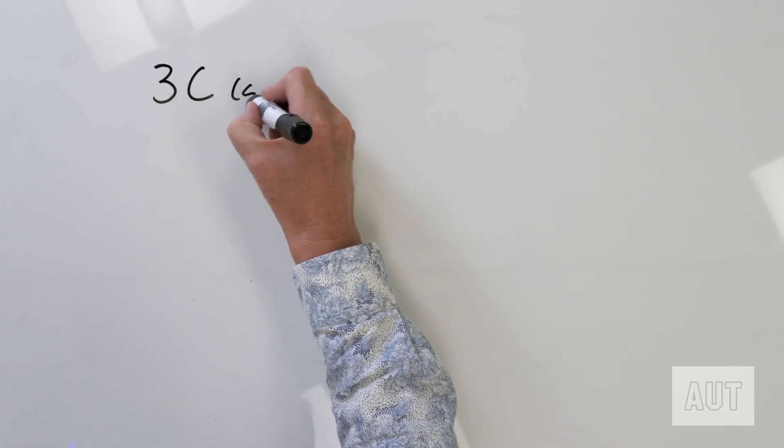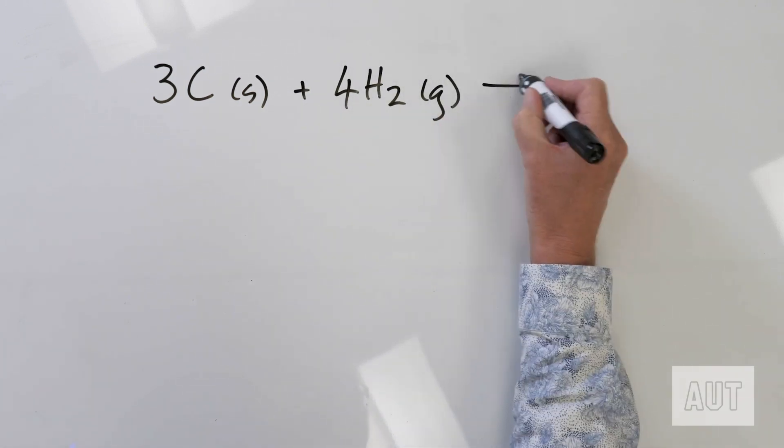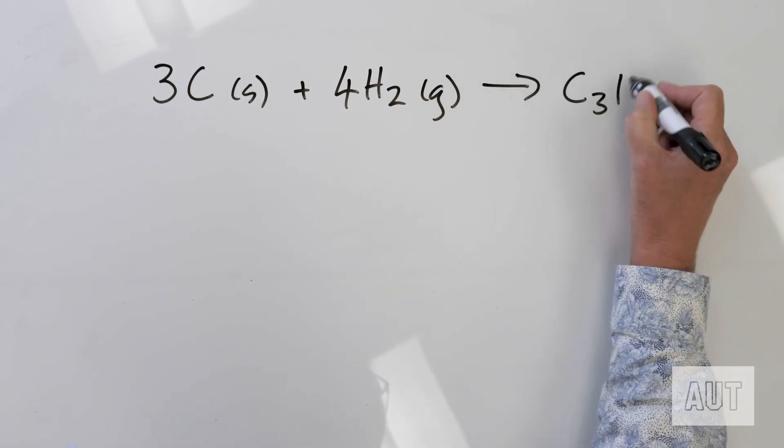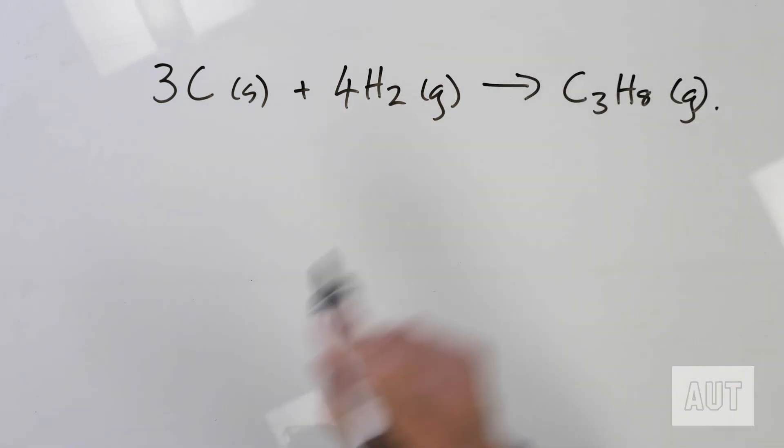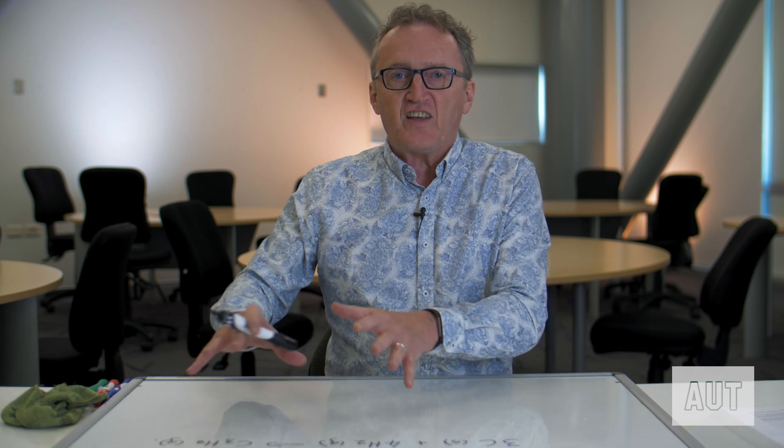We are going to look at this reaction: we've got three carbons reacting with four H₂s, giving us C₃H₈ as a gas, at 25 degrees Celsius. What we want to know is delta H for this particular reaction — the enthalpy change. Remember, delta means final minus initial, so we're taking the enthalpy on this side and subtracting the sum of the enthalpy on the other side.